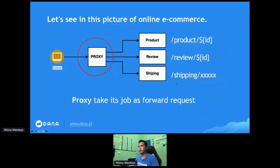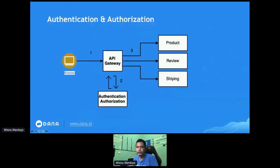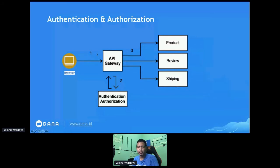Let's jump to the second topic: the common problems solved by the API Gateway. The first problem is authentication and authorization. An API Gateway is something you can expect to behave as a middleware component — a component that is able to intercept an incoming request, perform its own process, and decide whether the request can continue or not. With this basic functionality, the API Gateway is often used as the place to perform authentication and authorization.